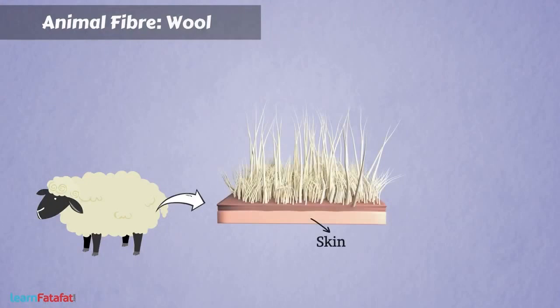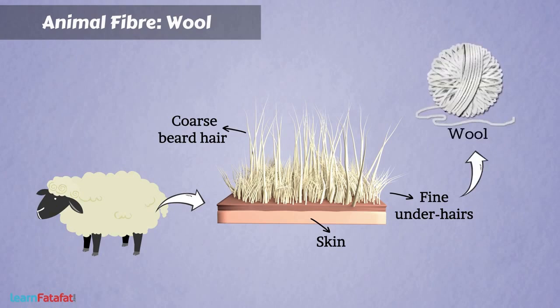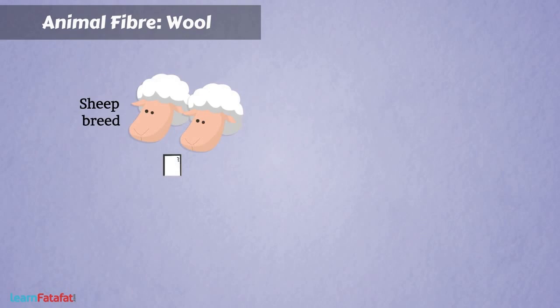The skin of sheep has two types of hairs: coarse beard hair and fine soft under-hair located close to the skin. Wool is obtained from the fine under-hairs of sheep. There are some breeds of sheep which have only fine under-hair.